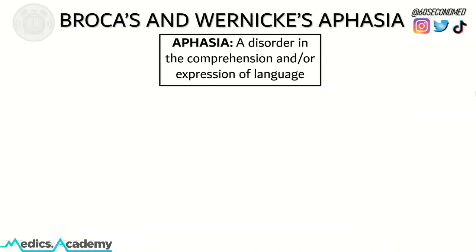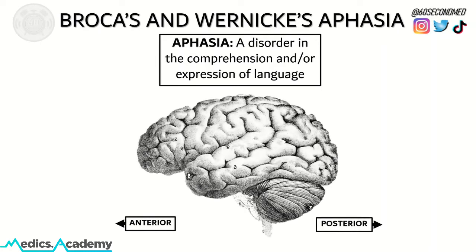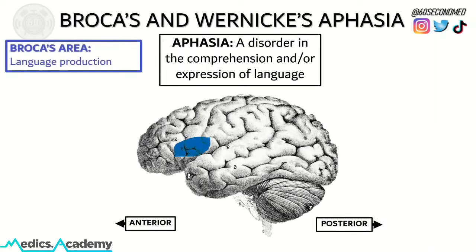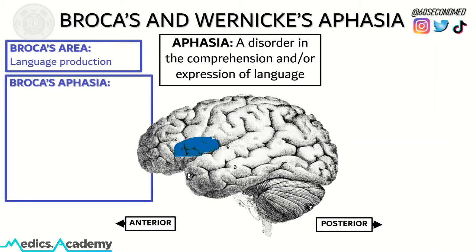Aphasia refers to a disorder in the comprehension and/or expression of language. It's typically associated with a stroke but can also occur secondary to trauma or a space-occupying lesion. In this picture of the brain, Broca's area is in the frontal cortex and is responsible for language production. Broca's aphasia is therefore a form of expressive aphasia.